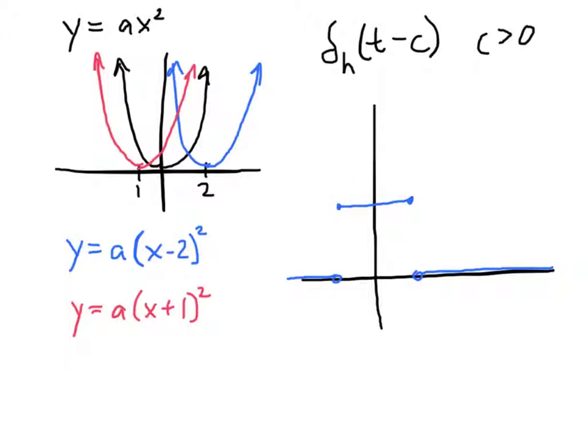And so the graph might look like this, where it's got some constant value around 0. And then after we go a certain distance either way from the origin, the function value becomes 0. So that blue, that would be just delta sub h. And let's take that and actually put it on the other side. So this would be the function delta sub h of t.